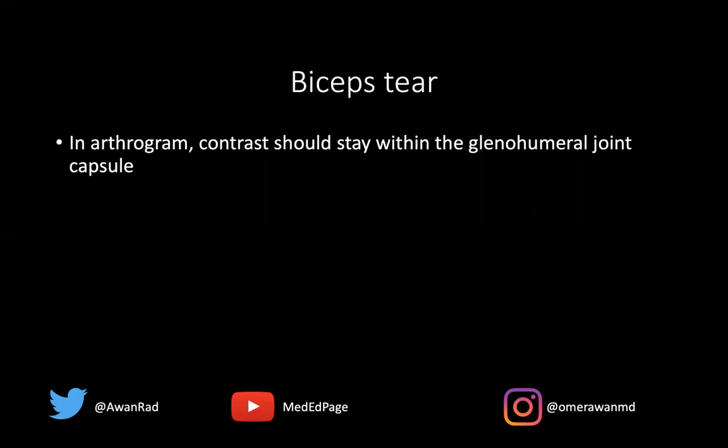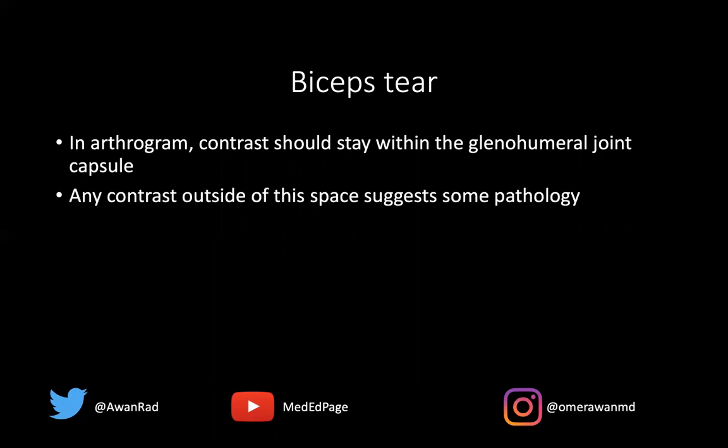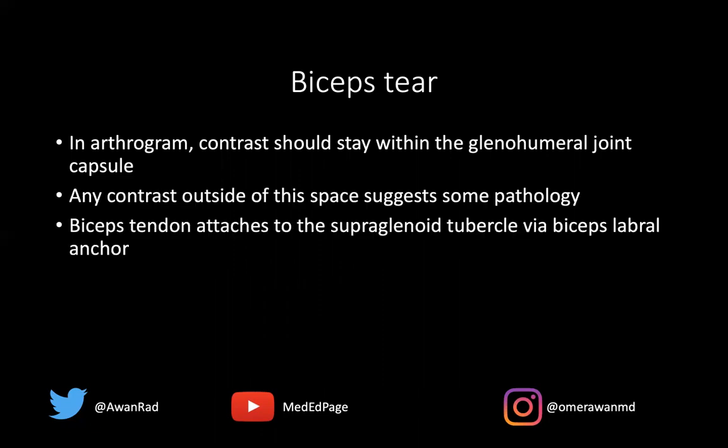Biceps tears are relatively common in an arthrogram. The key is to understand where contrast is going and where it's not supposed to be. Contrast should always stay within the glenohumeral joint capsule. If it goes anywhere else, it means some structure is torn. If it goes into the subacromial subdeltoid bursa, that means there must be a full thickness rotator cuff tear. In this case, we saw contrast or fluid within the substance of the biceps tendon itself. The biceps tendon normally attaches to the supraglenoid tubercle via the biceps labral anchor.